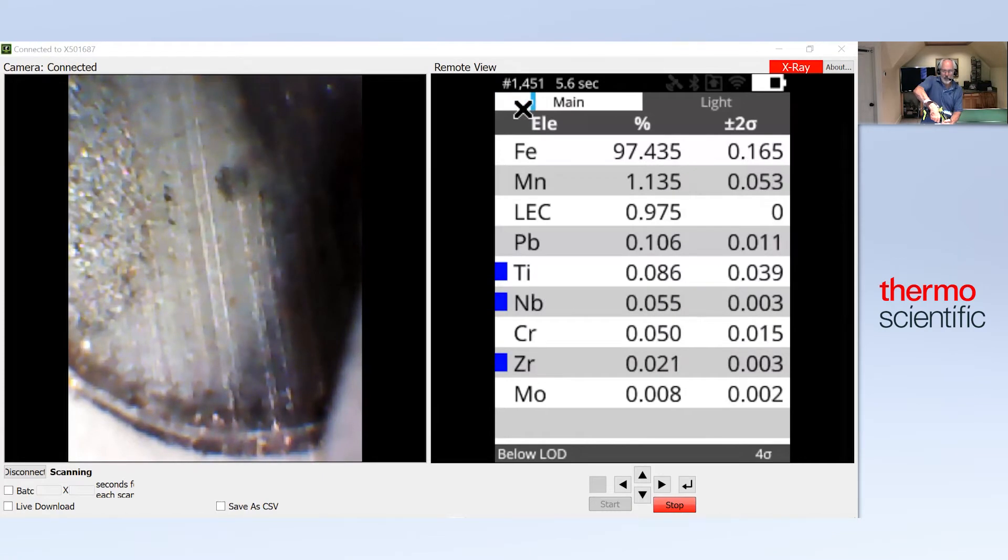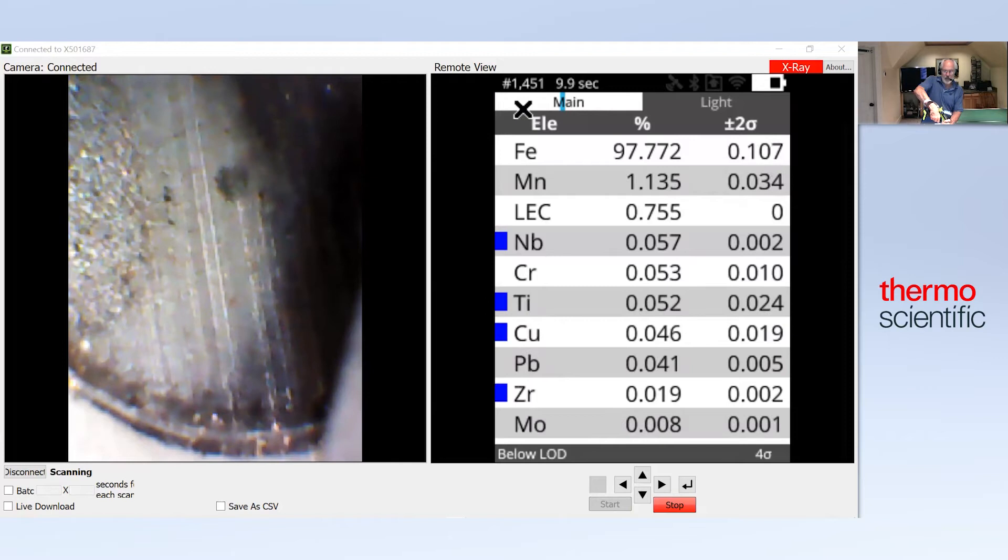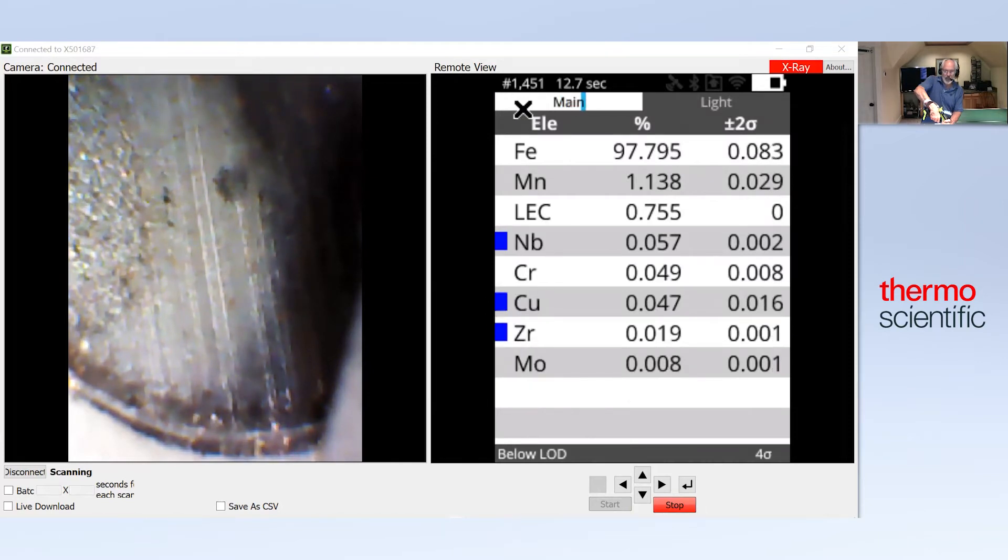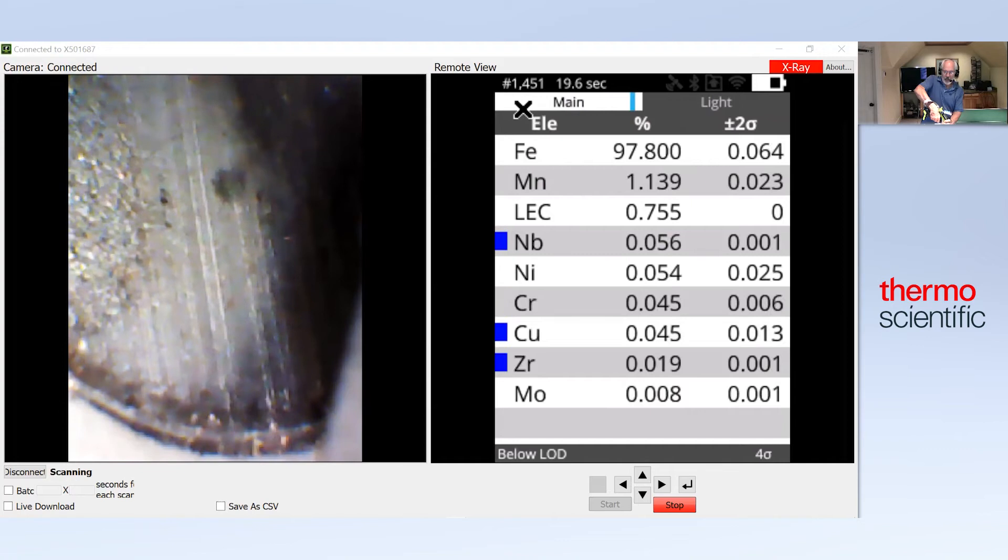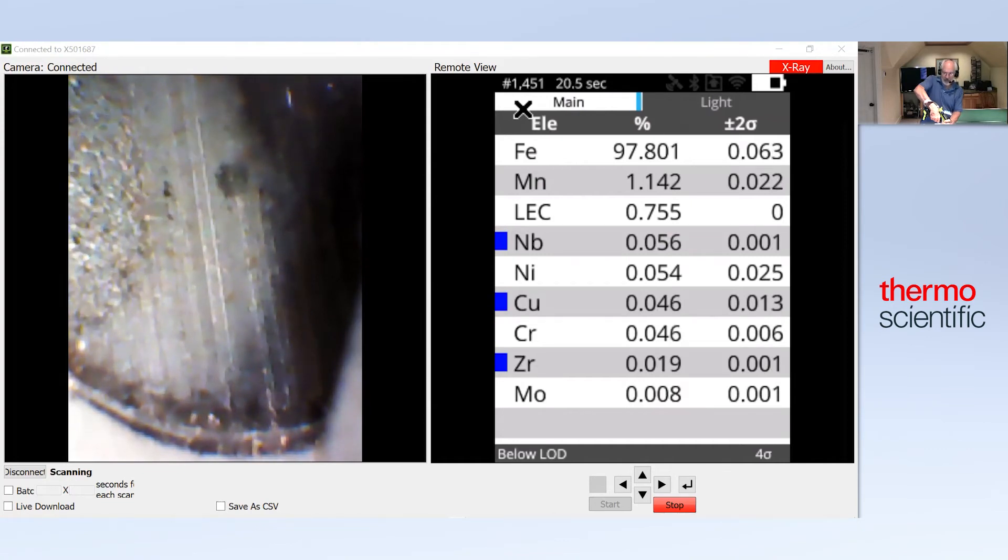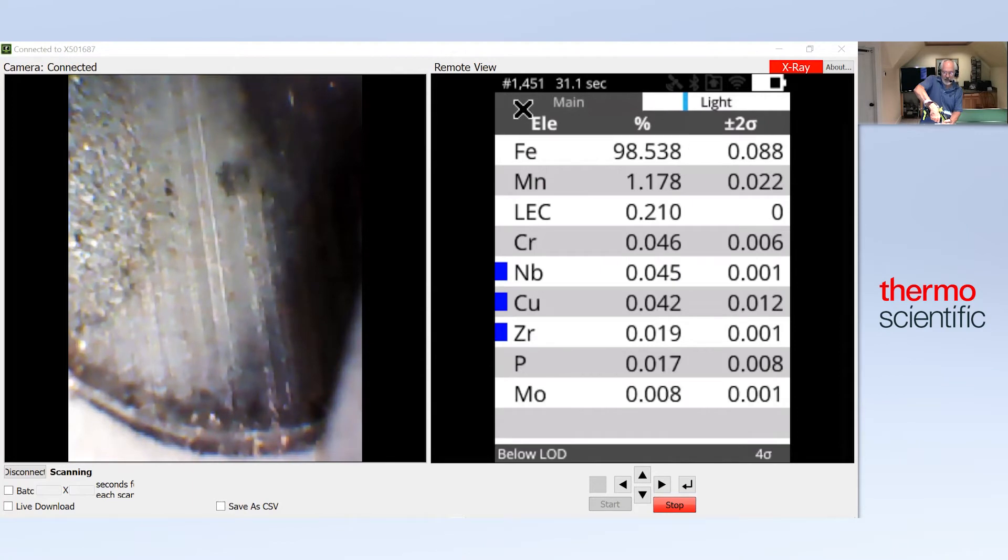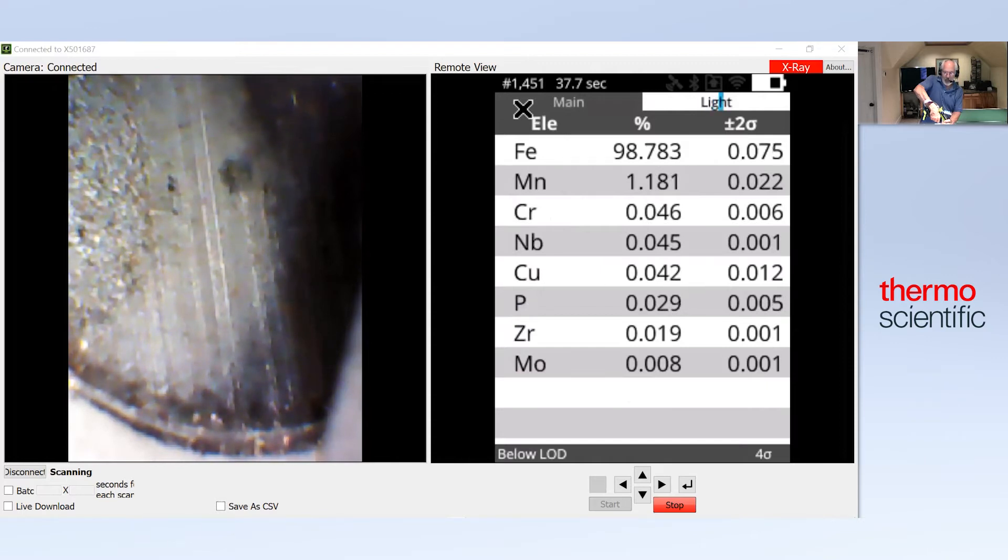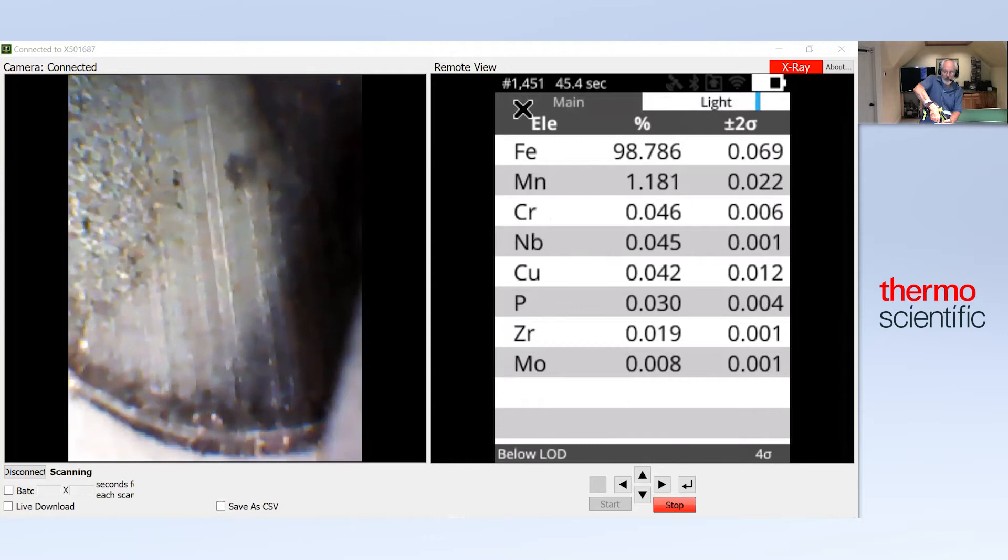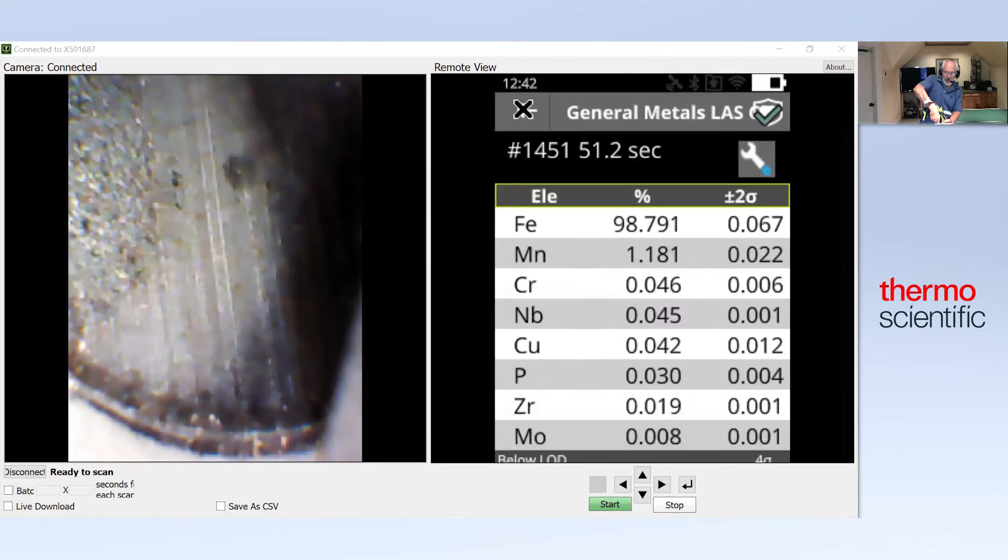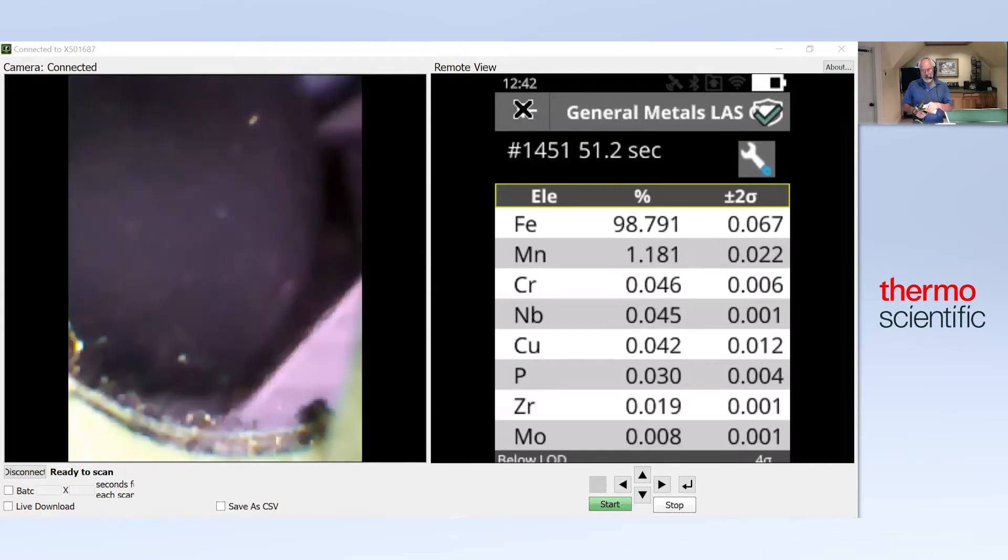The main filter is the one that measures the heavy elements, such as the ones you're seeing on the screen now with the exception of what's called LEC. LEC is light element content. That's the elements that we have to measure with the light filter, elements like aluminum, silicon, sulfur, phosphorus in the case of iron-based materials, or even magnesium in the case of aluminum alloys. The key with XRF is if you're looking for light elements and very small quantities, you measure a little longer because the longer you measure, the better the precision and therefore the better the accuracy.